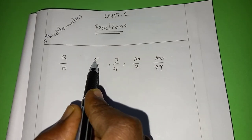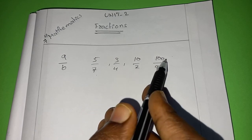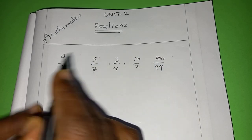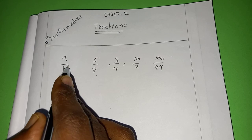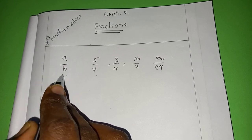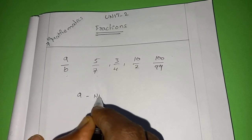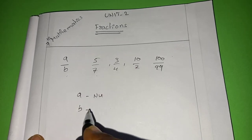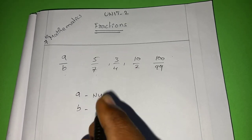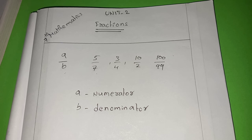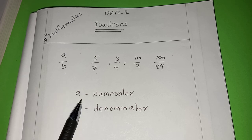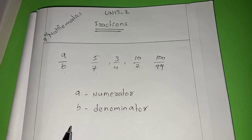Then what about the numbers 5, 3, 10, and 100? These are called the numerator. So, a number in the form of A by B is called a fraction. In that, A is the numerator and B is the denominator. The upper portion of a number is called the numerator and the lower portion is called the denominator.